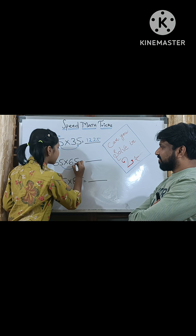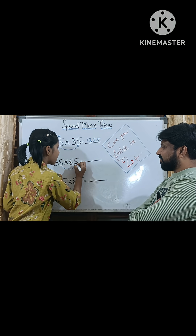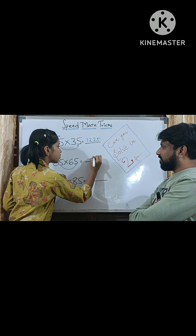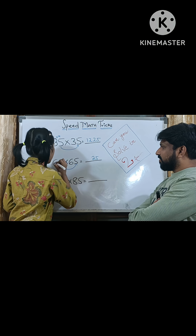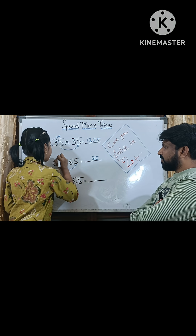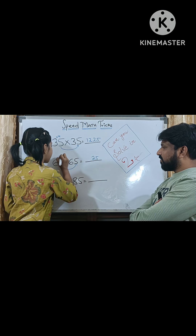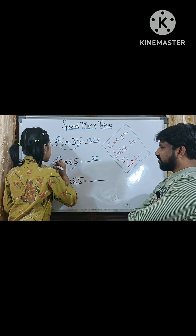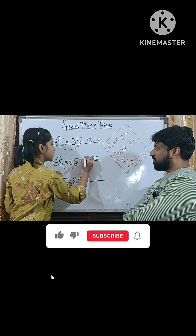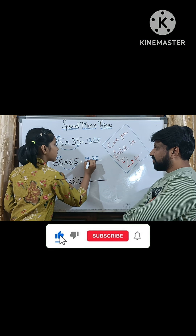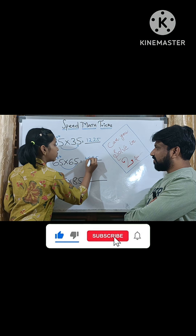5 multiplied by 5 is 25. The number after 6 is 7. 6 multiplied by 7 is 42.